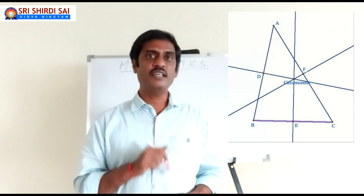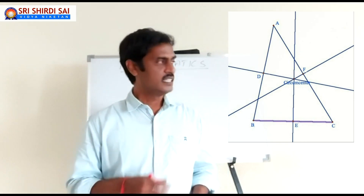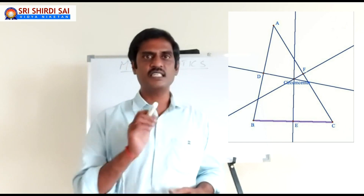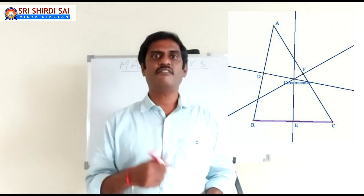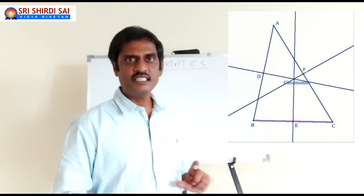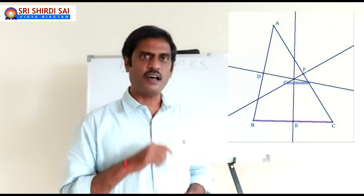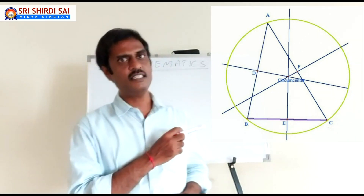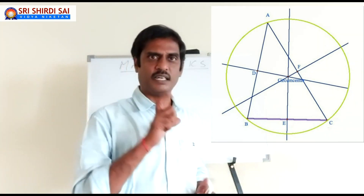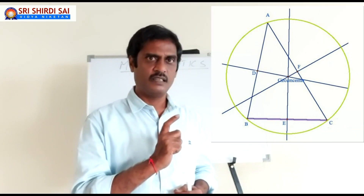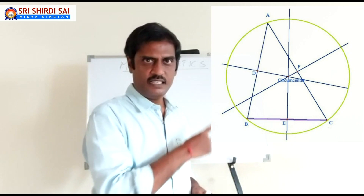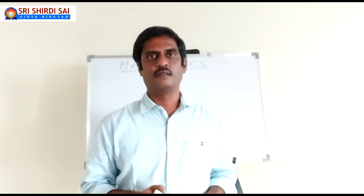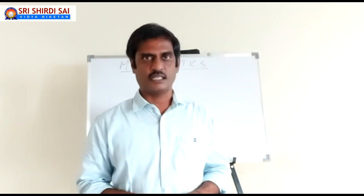The circumcenter is equidistant from the 3 vertices of the triangle. From the circumcenter to vertex A, or to vertex B, or to vertex C, the distance is the same. By taking this equidistant as a radius, if you draw a circle that passes through all 3 vertices of the triangle, see how the circle is formed. This circle is called the circumcircle, the radius is called the circumradius, and the center is called the circumcenter.